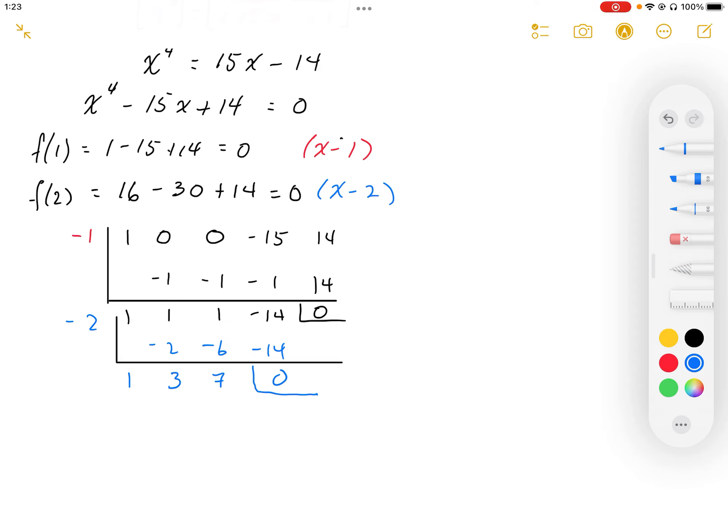Okay, so my quadratic that I'm left with then is going to be x squared plus 3x plus 7 equals 0.